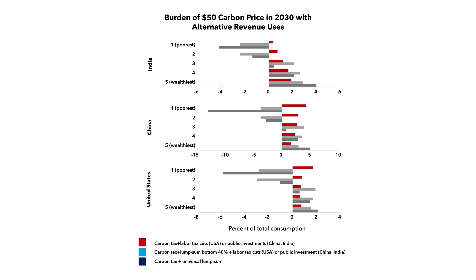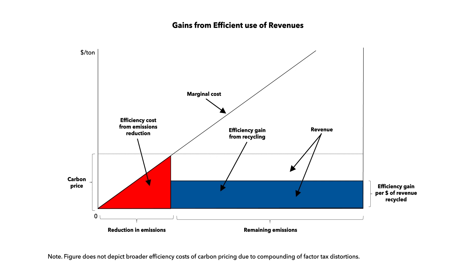If instead all revenues are used to cut labor taxes or fund public investments, then the overall policy is moderately regressive in China and the US and progressive in India. Alternatively, if 40% of the revenues go to the bottom two quintiles and the rest is used for labor tax cuts or investment, the bottom two quintiles are substantially better off on net. But there's a lot at stake in terms of economic efficiency in how carbon pricing revenues are used. If they are used to cut distortionary taxes on labor and capital or fund productive investments for sustainable development goals, there is a gain in economic efficiency.